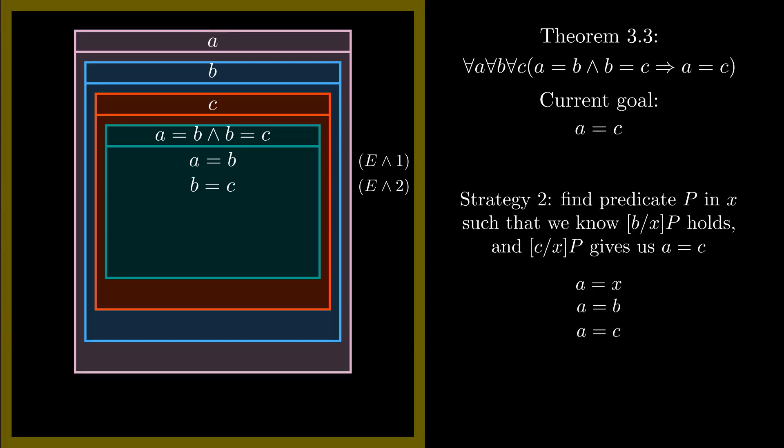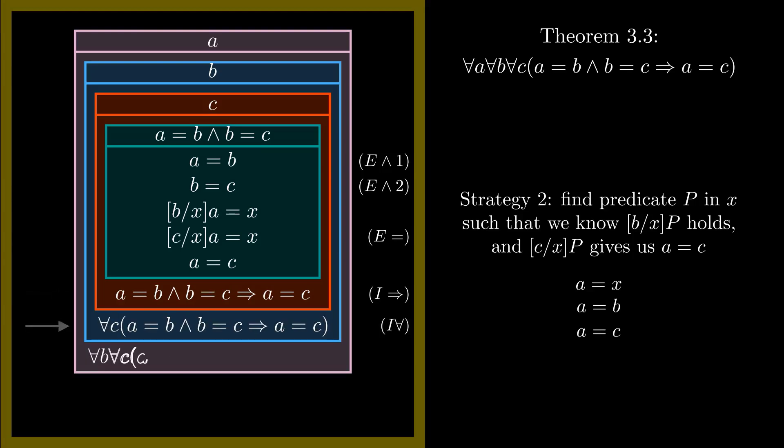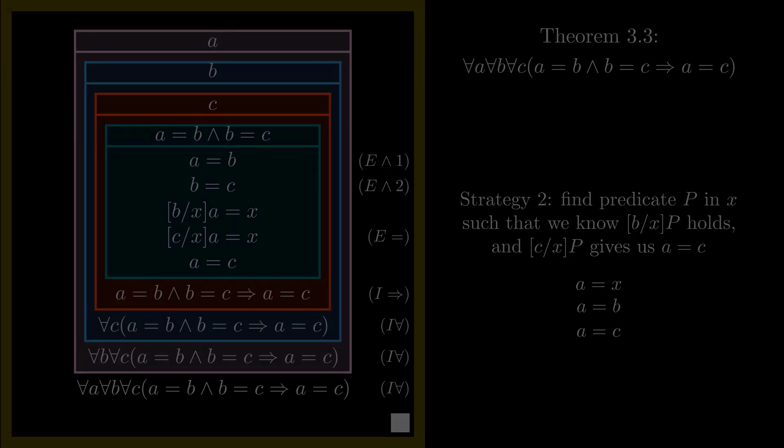Great! So let's rewrite a equals b as the substitution of b for x in a equals x, and apply our elimination rule for equality and the fact that b equals c to get the substitution of c for x in a equals x. That is, a equals c. Now we can take this out of these boxes, one at a time, to get the result we set out to prove. QED.